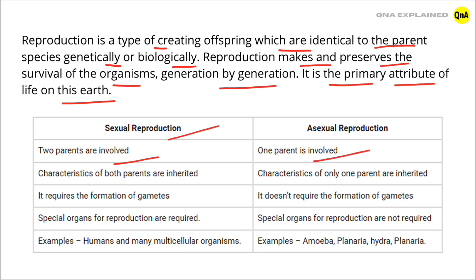In sexual reproduction, characteristics of both parents are inherited. While in asexual reproduction, characteristics of only one parent are inherited.